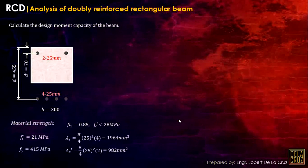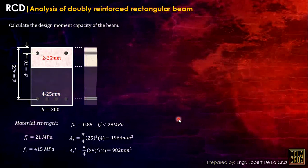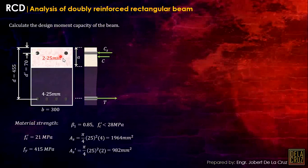Now this is our stress diagram or force diagram. This is the tension, this is the compression of the concrete, and we have the compression of the steel bar. We won't isolate the compression steel bar here because the section is already clearly doubly reinforced — unlike in a design problem where we isolate to evaluate singly and doubly. Here it's clear this is doubly reinforced, so we can go directly to our forces.